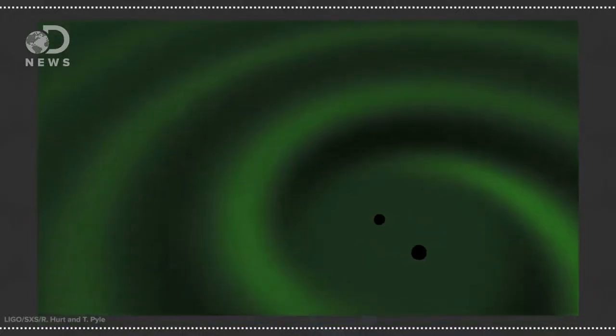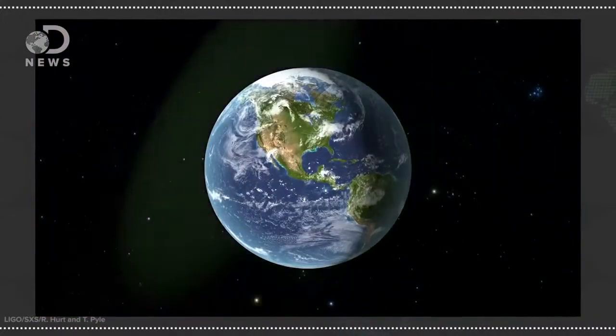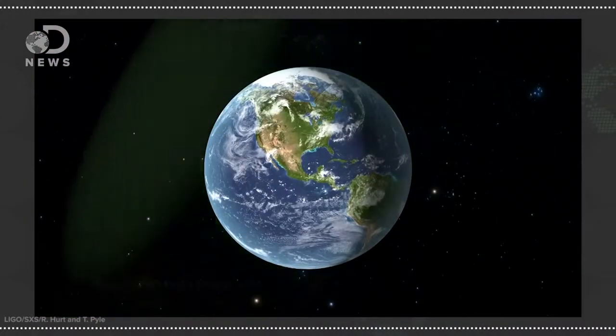The theory goes that two black holes will circle each other and lose energy that's released as gravitational waves. Over time they will get closer and closer over the course of a few billion years, then finally collide in a fraction of a second. This releases a large amount of mass as energy in the form of gravitational waves.